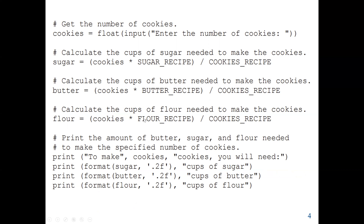We can also calculate the cups of flour needed: the number of cookies we want to produce times flour_recipe divided by cookies_recipe. The flour_recipe amount given can produce 48 cookies, and 48 is stored in the cookies_recipe constant variable.